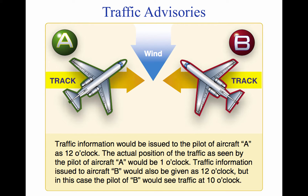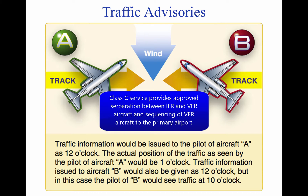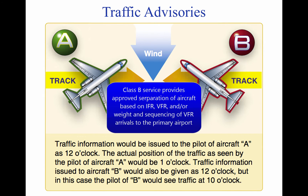In addition to basic radar service, Terminal Radar Service Area, TURSA, has been implemented at certain terminal locations. TURSAs are depicted on sectional aeronautical charts and listed in the AFD. The purpose of this service is to provide separation between all participating VFR aircraft and all IFR aircraft operating within the TURSA. Class C service provides approved separation between IFR and VFR aircraft and sequencing of VFR aircraft to the primary airport. Class B service provides approved separation of aircraft based on IFR, VFR, and/or weight, and sequencing of VFR arrivals to the primary airport.